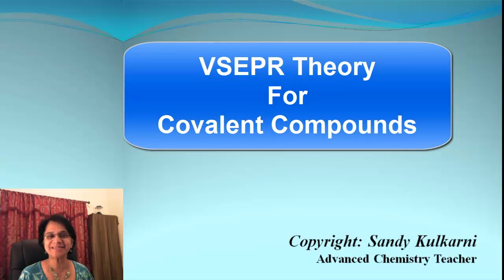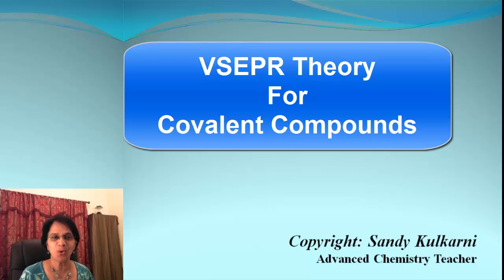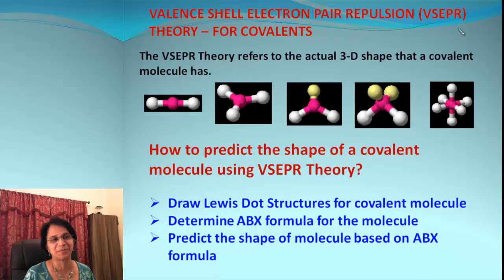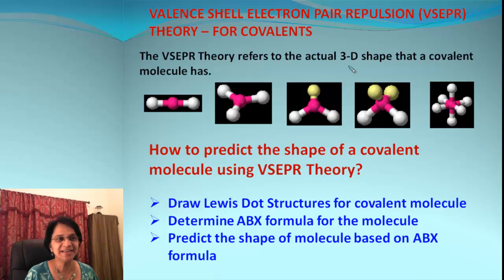Hey kids, Miss Kulkarni here. In this video we will talk about VSEPR theory in covalent compounds and how it is useful to predict the shape of those molecules. VSEPR theory is Valence Shell Electron Pair Repulsion theory and it can predict the 3D shape of covalent molecules.